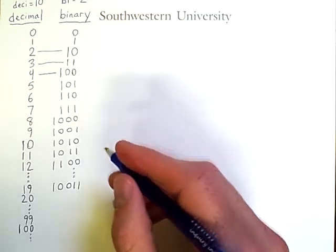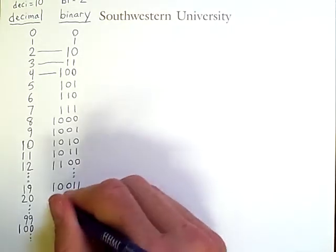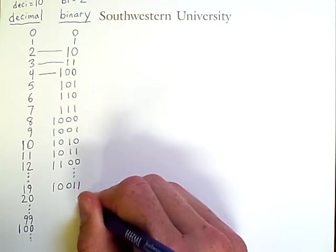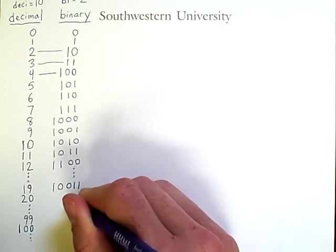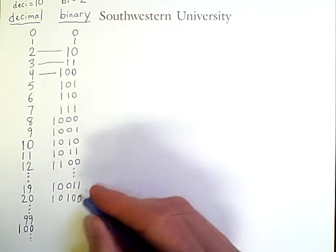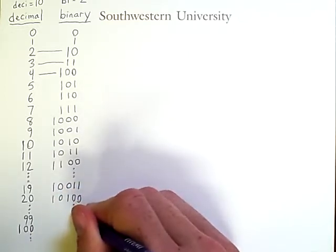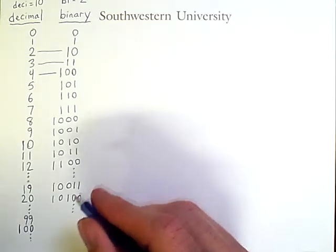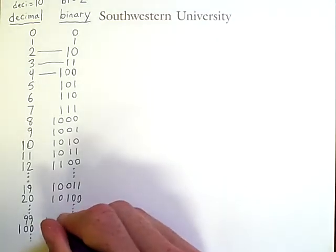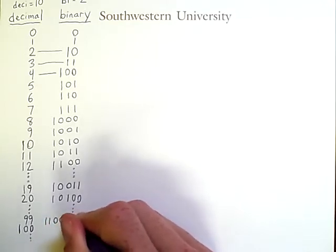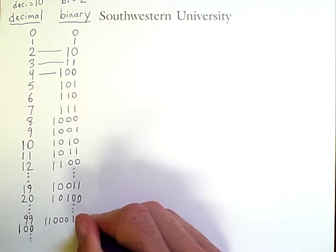But first, let's go ahead and add the binary number for 20, which if we add 1 to this, that becomes a 0, that becomes a 0. We get a 1 here, then a 0, then a 1. And going on to 99, we would have 1, 1, 0, 0, 0, 1, 1.